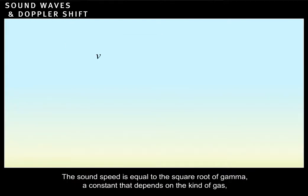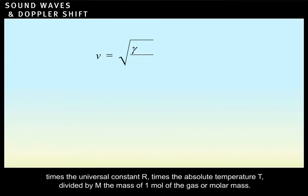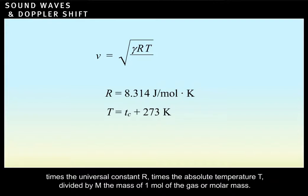The sound speed is equal to the square root of gamma, a constant that depends on the kind of gas, times the universal constant R, times the absolute temperature T, divided by M, the mass of one mole of the gas, or molar mass.